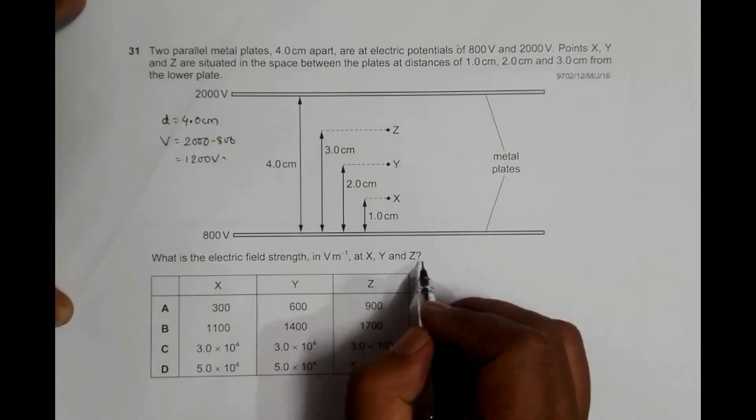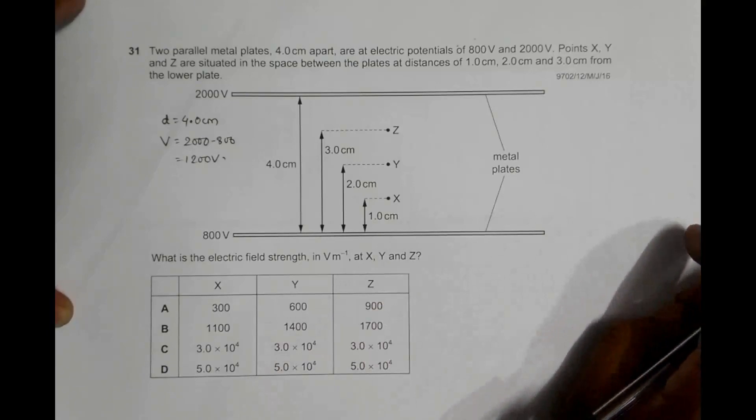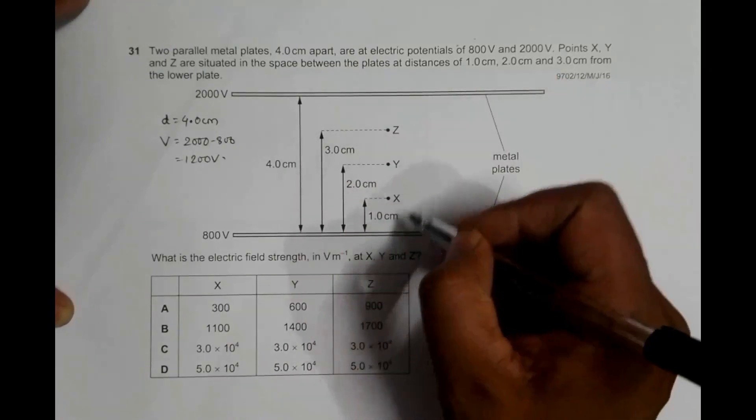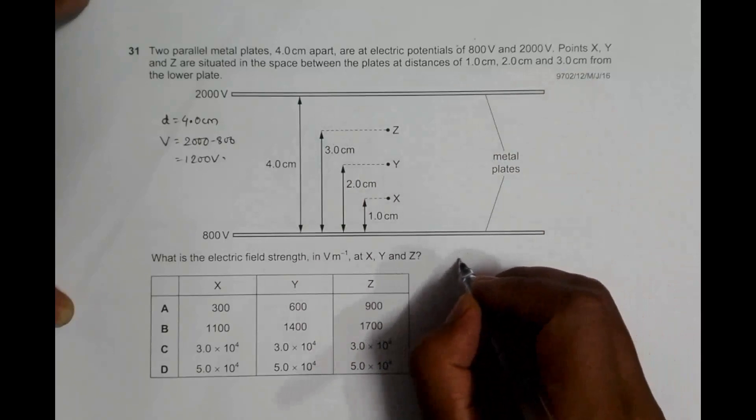This question is a very tricky question, and if you understand one thing, we don't need to do much. It's because when we have two parallel plates like this, the value of E is equal to V by D.